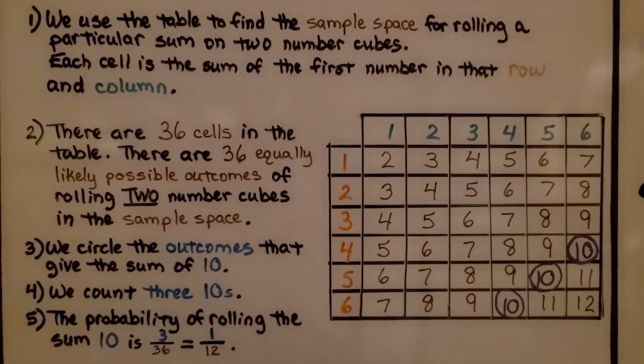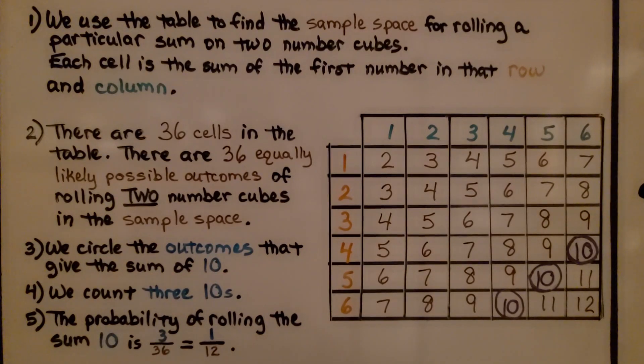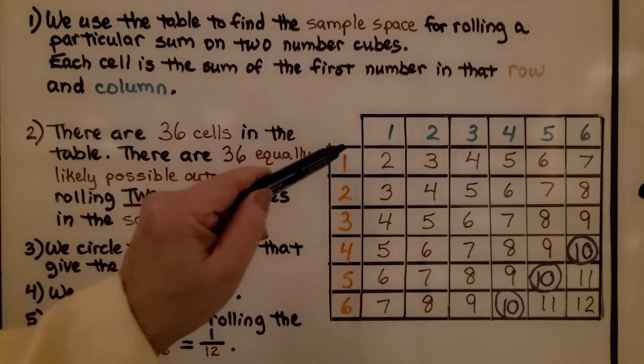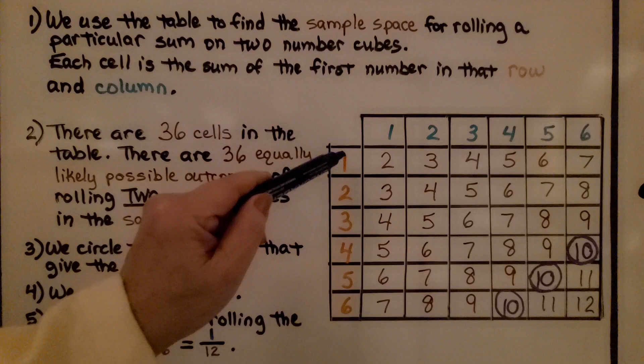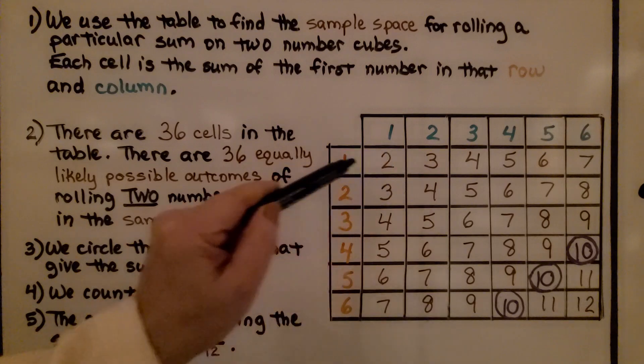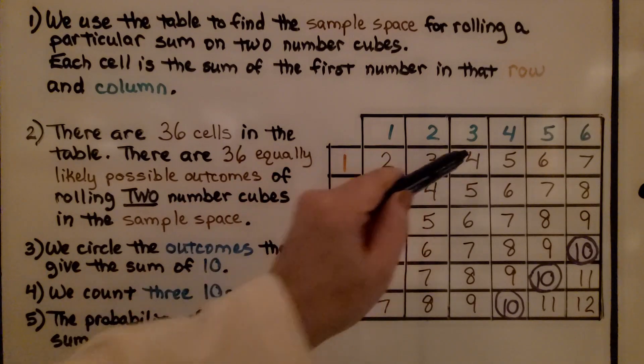We use the table to find the sample space for rolling a particular sum on two number cubes. Each cell, each box, is the sum of the first number in that row and column. If we have a 1 and a 1, that's 2. If we have a 1 and a 2, that's 3. If we have a 1 and a 3, that's 4.